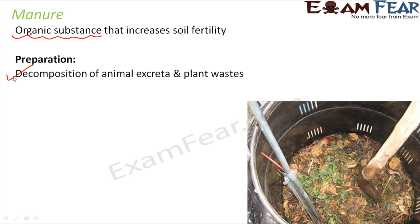These things get rotten by the action of microorganisms like bacteria and fungi. These microorganisms break down organic substances into inorganic substances which are useful to the plants. That is how nutrients are formed in the soil and therefore soil quality and fertility improve.